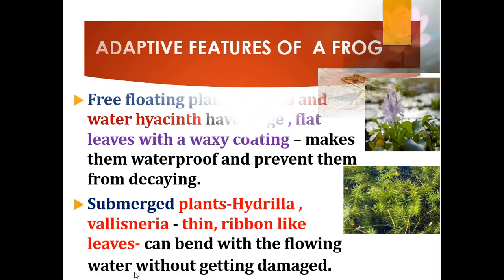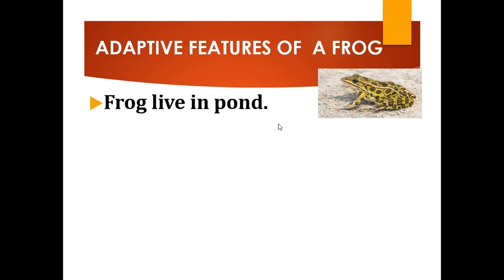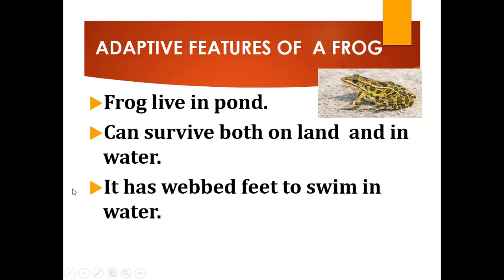Now let's move to the adaptive features of a frog. Frogs live in ponds and they can survive both on land and in water — frogs are amphibians. Some adaptive features help them to stay in water.